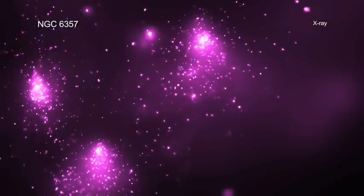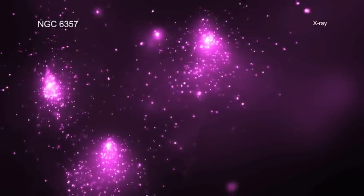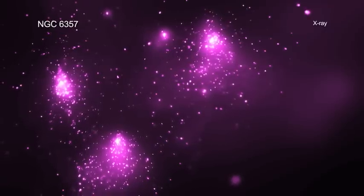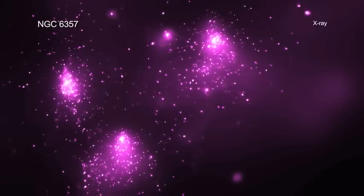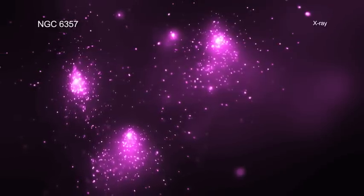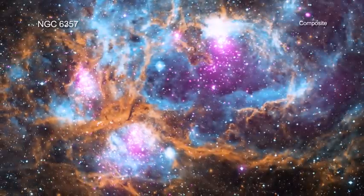Researchers used Chandra to study NGC 6357 and similar objects because young stars are bright in X-rays. Also, X-rays can penetrate the shrouds of gas and dust surrounding these infant stars, allowing astronomers to see details of star birth that would otherwise be missed.